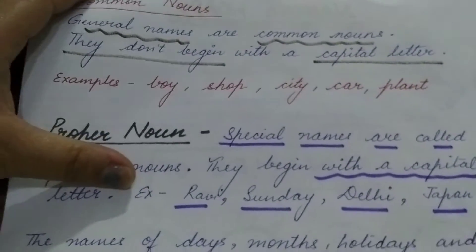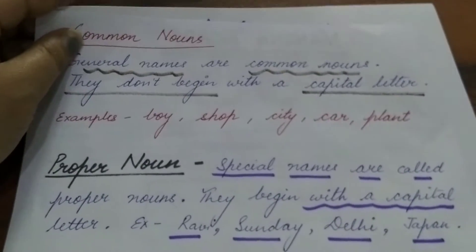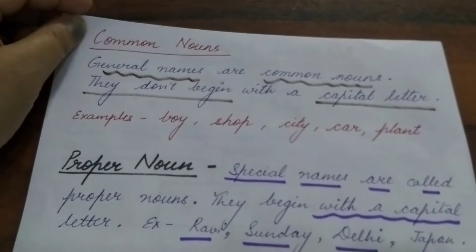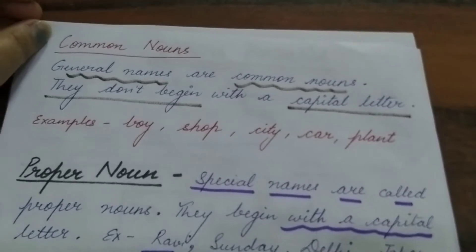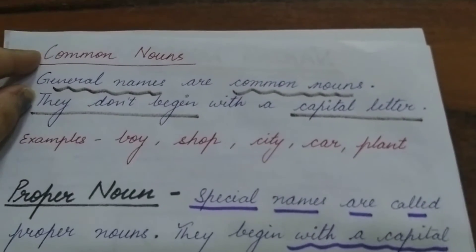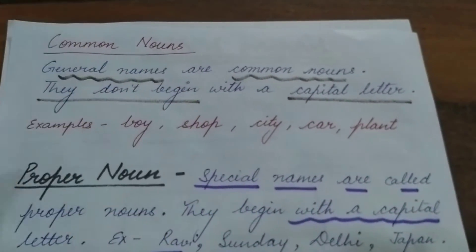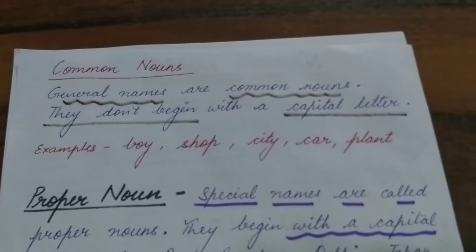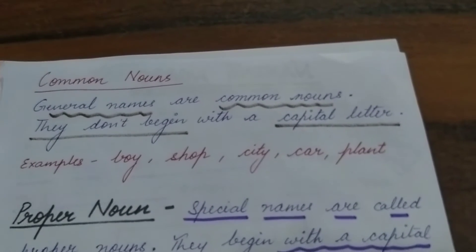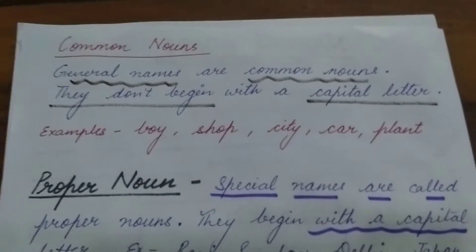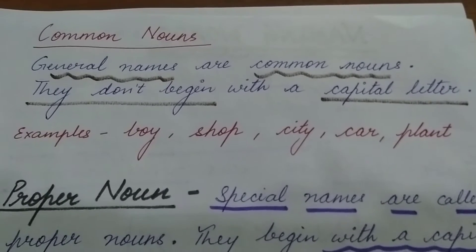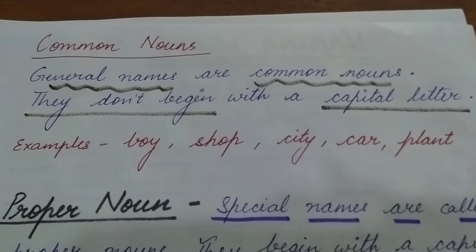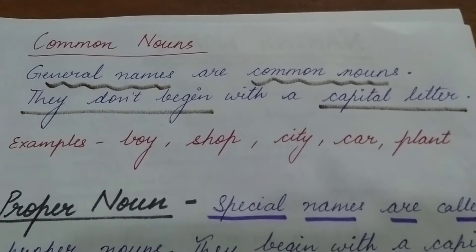Now children, naming words are divided into two categories. In this video, we will learn about common noun and proper noun. There are other nouns also — abstract noun and collective noun — but in this video we are going to learn about common noun and proper noun. Common nouns are the general names. They don't begin with a capital letter. For example: boy, shop, any shop, city, any city, car, plant. These are the general names.